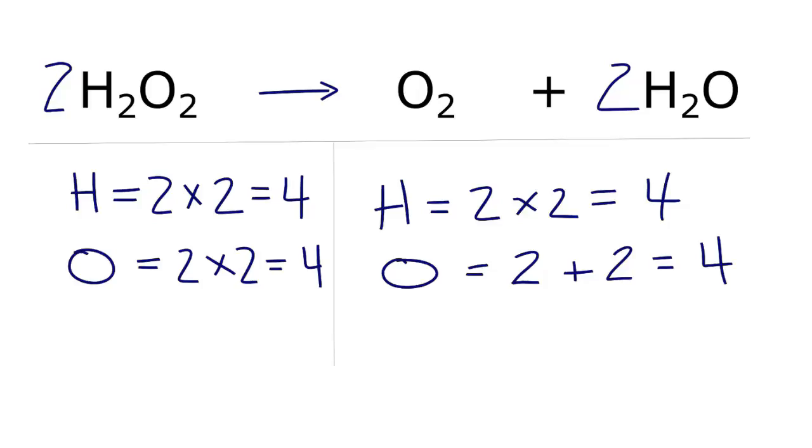Also remember that if you have an odd number of oxygens, sometimes multiplying it by two will make the chemical equation much easier to balance. This is Dr. B with the balanced equation for H2O2 yields O2 plus H2O, and thanks for watching.